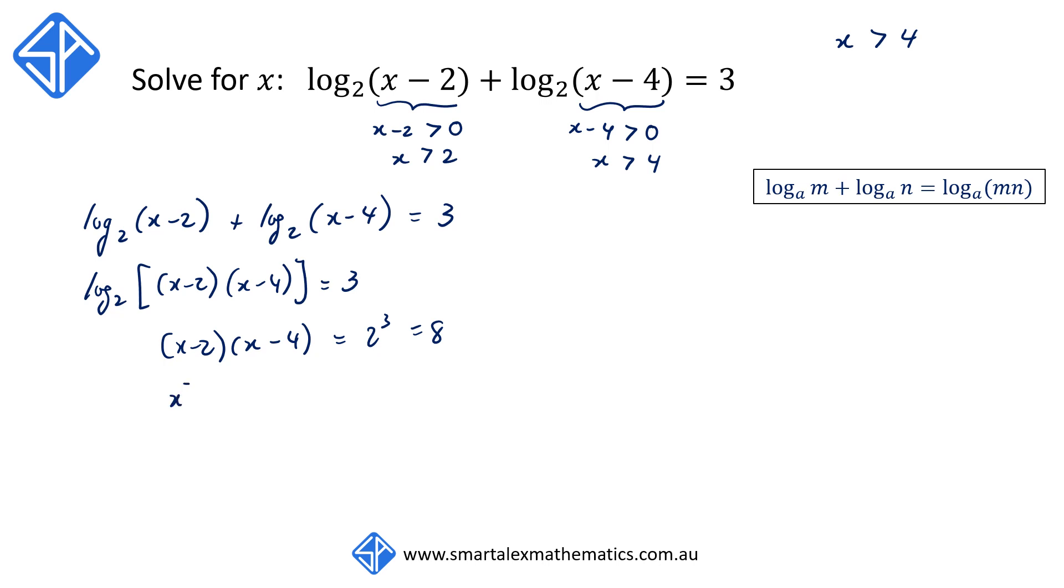Expanding the left-hand side, x squared minus 6x plus 8 is equal to 8. The 8 from the left and the right will cancel each other out.